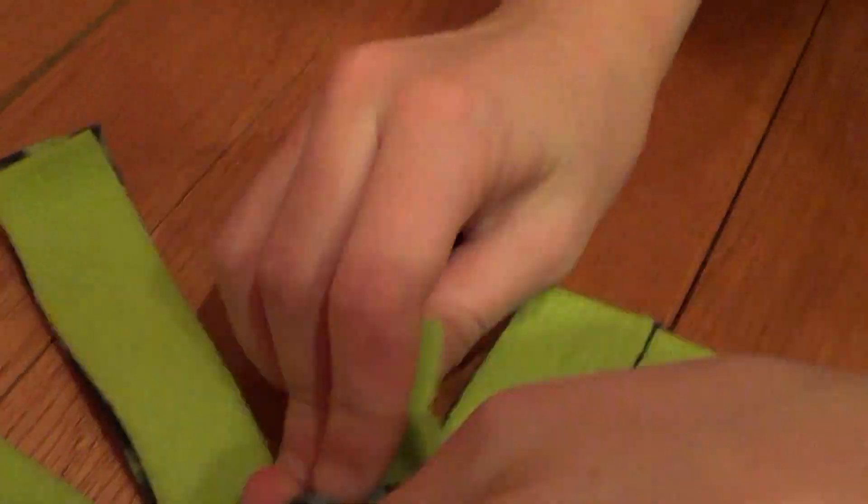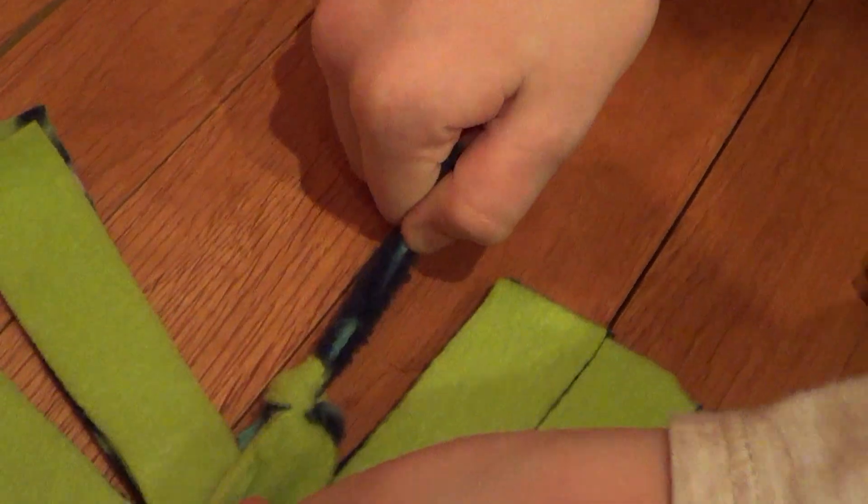Now we're going to tie the strands. Tie each one the same by making two tight knots.